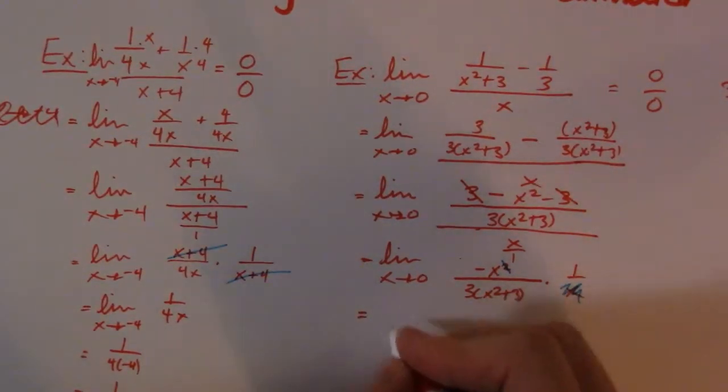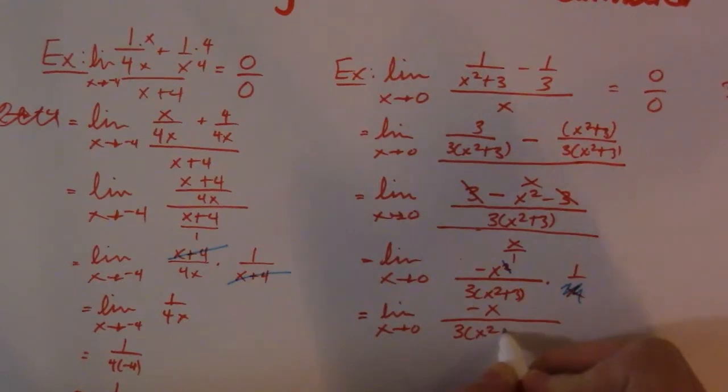I got that to cancel with this. Unfortunately, I still have 0 on the top, but that doesn't matter. The top is still 0, but the bottom no longer is. That's what's important. Now I can sub in 0,